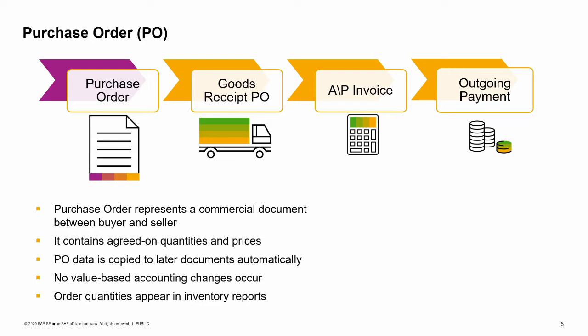Now let us take a detailed look at the first step in the purchasing process: the purchase order. A purchase order is a commercial document issued by a buyer to a seller specifying the items or services that the seller will provide the buyer. The purchase order includes the agreed-to quantities and price for the products listed. Normally, when goods are received, purchase orders are matched with packing slips and vendor invoices before the invoices are paid.